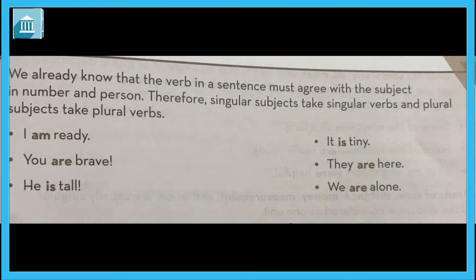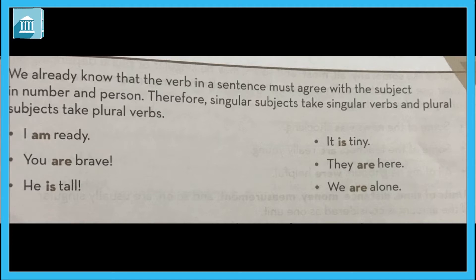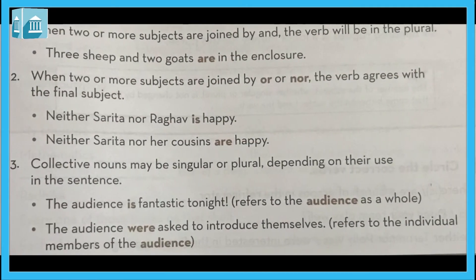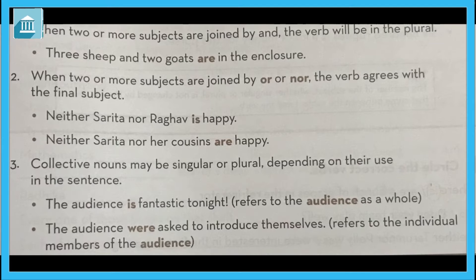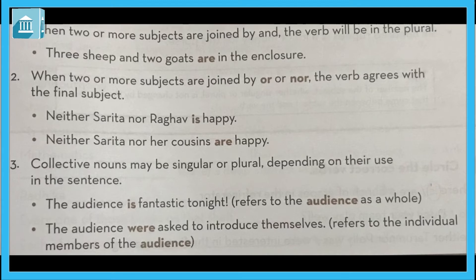There are many more places where we make mistakes in English. We will look at these common English errors to rectify subject-verb agreement. The first rule: when two or more subjects are joined by 'and', the verb is plural. For example, 'Three sheep and two goats are in the enclosure.' Here we have two subjects — sheep and goat.